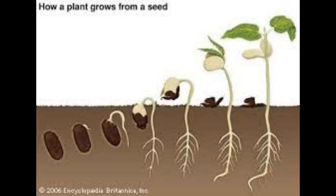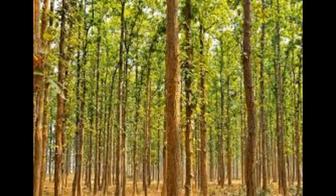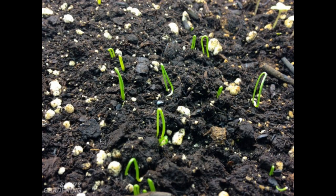If all seeds germinated, we would see only plants living on the earth with no space for any other living organisms. When seeds are produced in large numbers, actually not all of them germinate — some never develop into new plants, or the seeds that do germinate may die before maturation due to unavailability of water and nutrients.